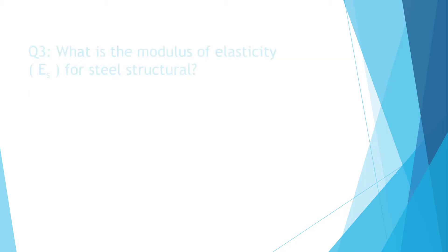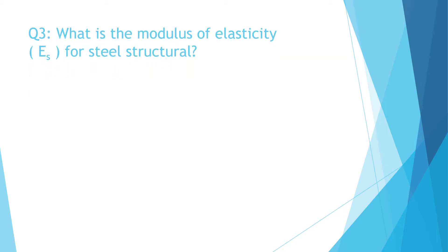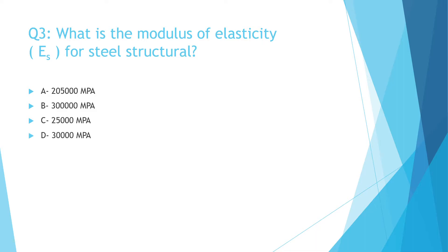Question 3: What is the Modulus of Elasticity ES for Steel Structure? A. 205,000 MPa, B. 300,000 MPa, C. 25,000 MPa, D. 30,000 MPa. The correct answer is A: 205,000 MPa.